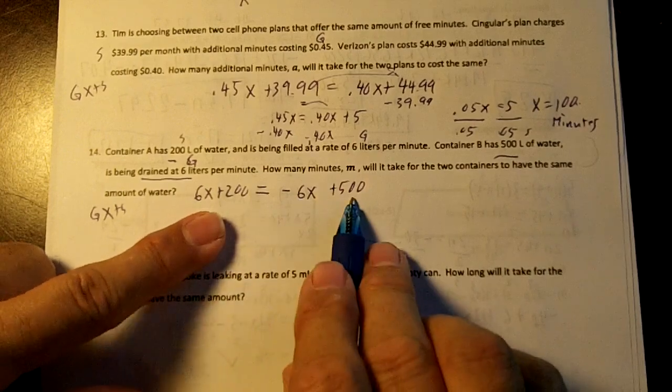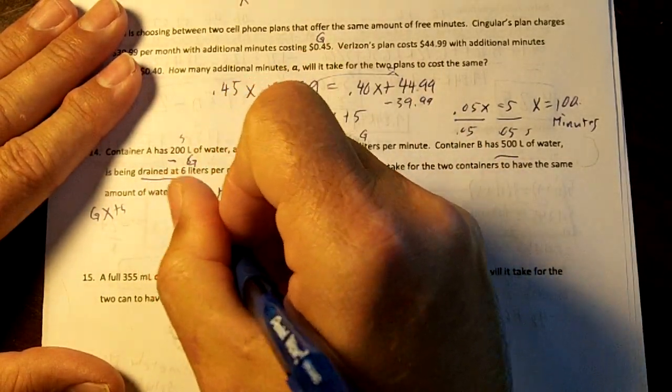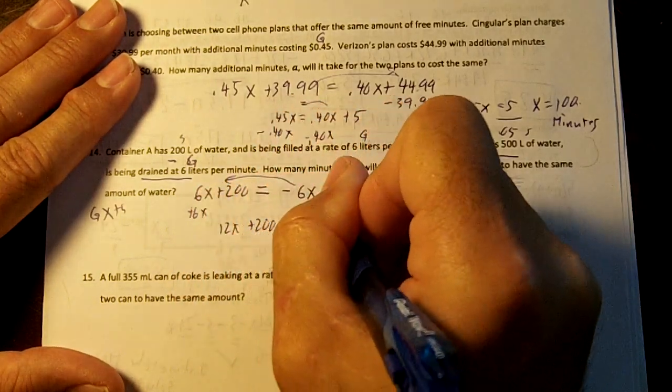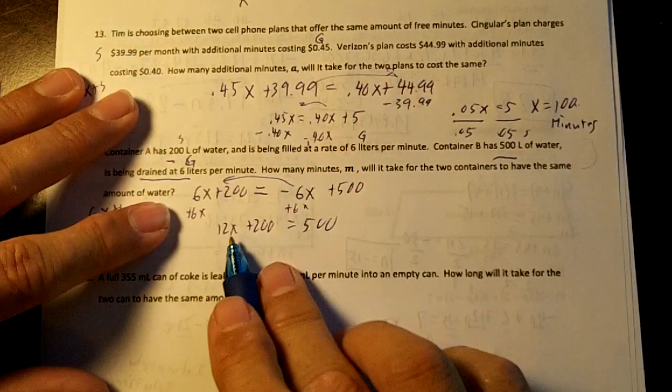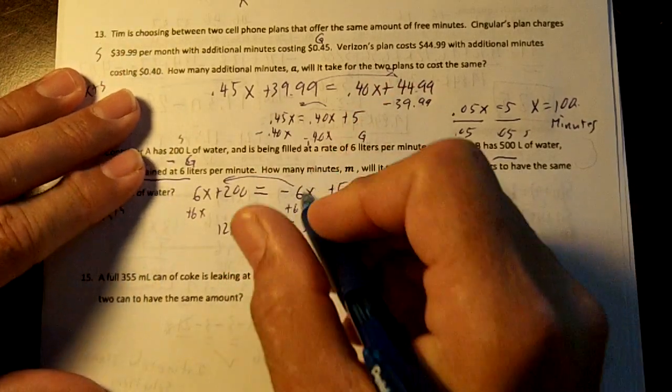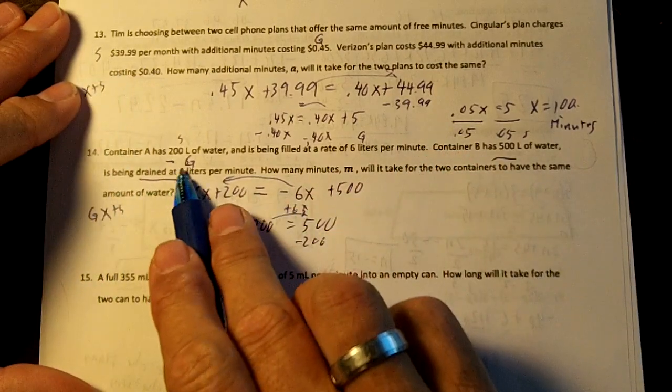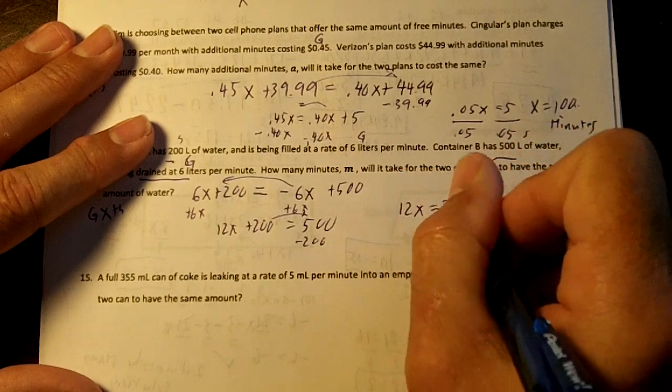So we want to group the letters first, then combine the numbers. So I'm going to move my 6X over. I'm going to get 12X plus 200 equals 500. I added the 6X across. I got 12X plus 200 equals 500. I'm going to move the 200 over. Key on this is to get that negative growing number because you're draining the water. So we're going to get 12X equals 300.